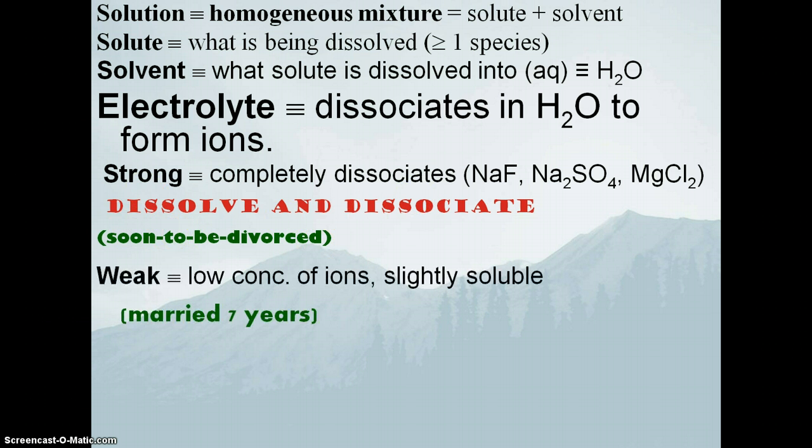Then we have the weak electrolytes. Weak electrolytes are species compounds that have a low concentration of ions and they're only slightly soluble, meaning they only partially dissociate. We can think of them, going back to our marriage analogy, as the couple that's been married for like seven years. They'll kind of come and go, they might separate and go talk with friends, and then later they'll come back and sort of talk a little bit. They're here and there and sometimes they're going and sometimes not.